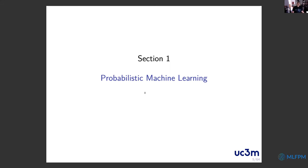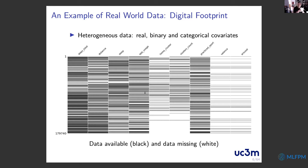This is an example of real-world data I work with almost every day — the digital footprint of a person. It represents all the data that can be gathered passively from smartphones and wearable devices. The first thing you realize is that your data is not as simple as expected: you can have natural number count data, like the steps you perform in a given day. This is data from almost 180,000 days from different users.